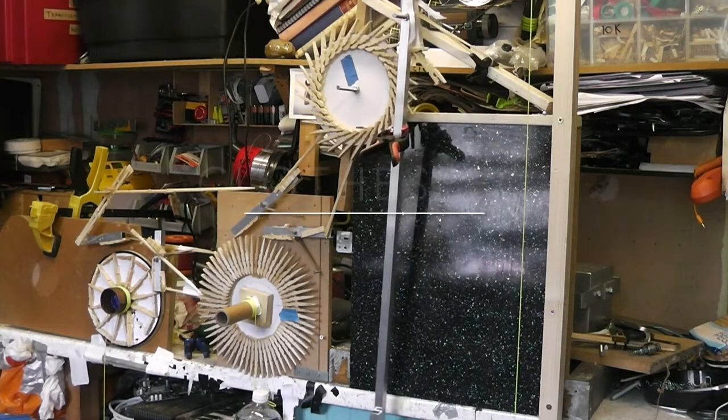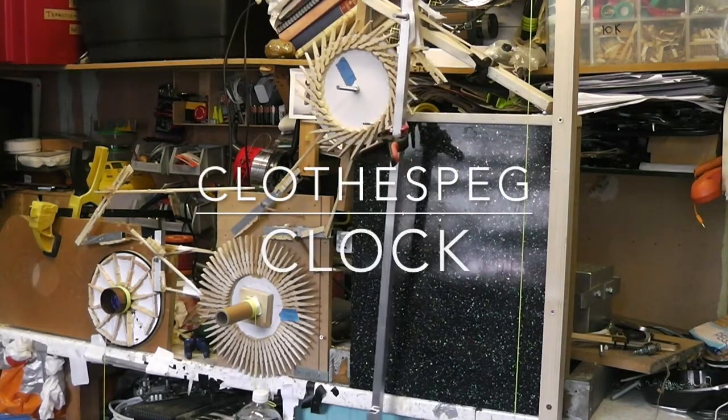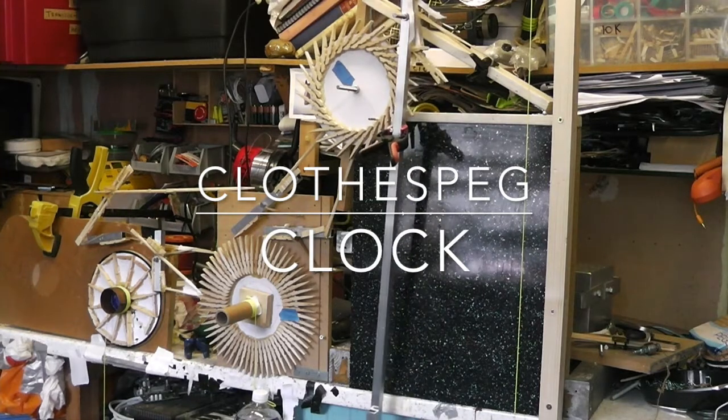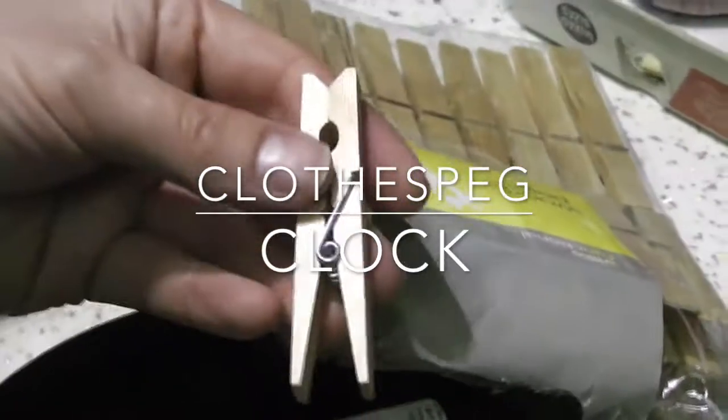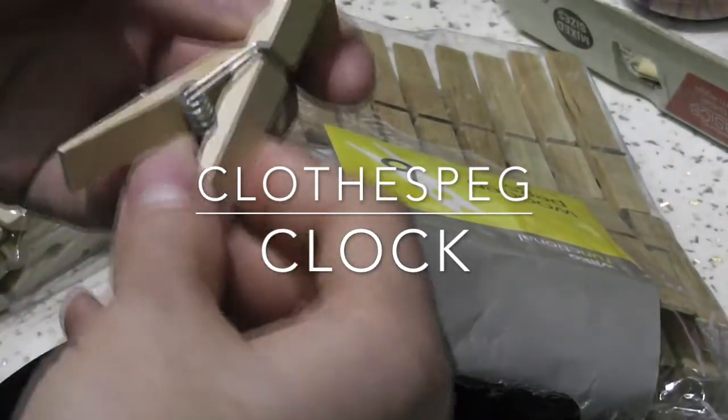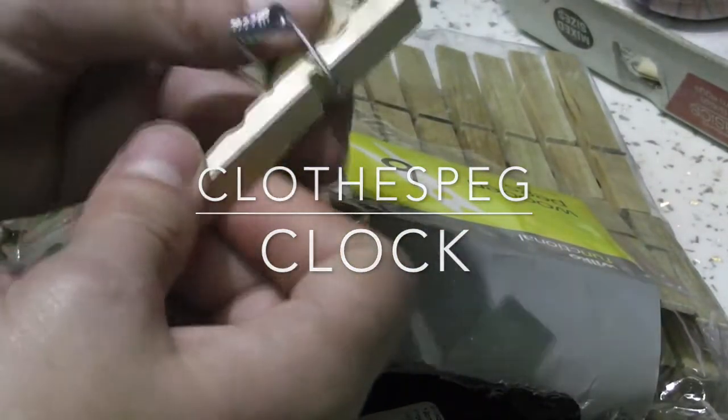But there are a lot of clothes pegs in this build so this is my clothes peg clock. It's very rare you actually see that word clothes peg written down. It looks kind of strange, it looks like clothispeg but maybe that's just me.